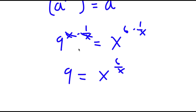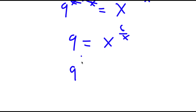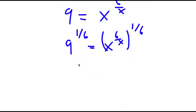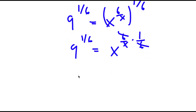Now, I'm going to take the power of 1 over 6 on both sides. So now I have 9 to the power of 1 over 6 is equal to x to the power of 6 over x to the power of 1 over 6. And again, this is going to equal x to the power of 6 over x times 1 over 6. These two cancel out, so now I'm left with 9 to the power of 1 over x is equal to x to the power of 1 over x.